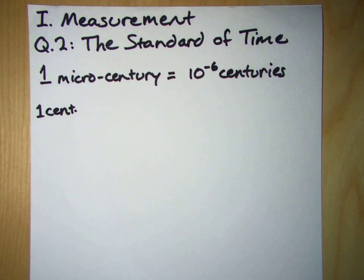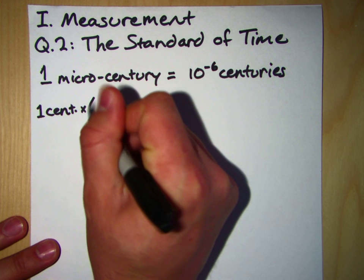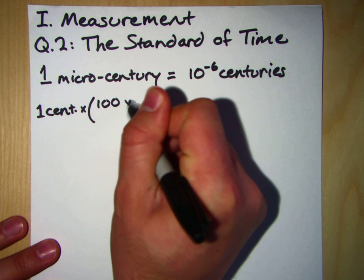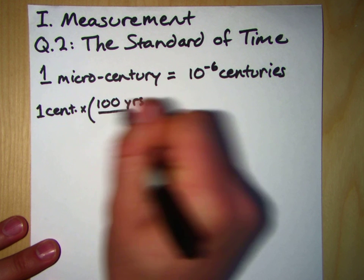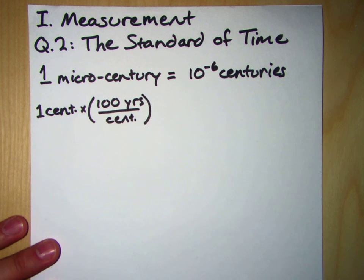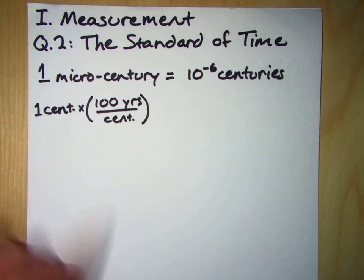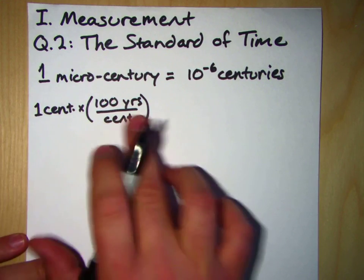So we're going to do a unit conversion, much like we did in question one of this section. We're going to multiply it by one. We're going to multiply it by a unit conversion that gives us years to start. So we know that a century is, we multiply this by one, i.e. 100 years for every one century. Okay, well that gets us to years.